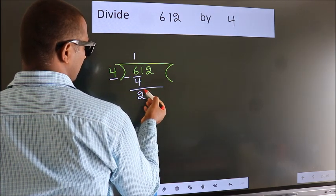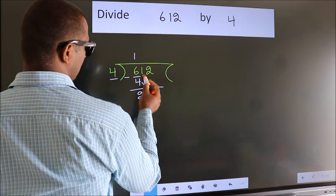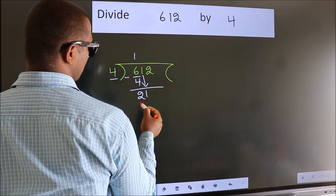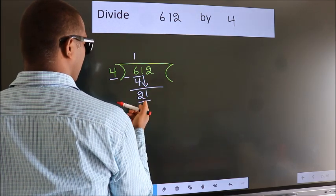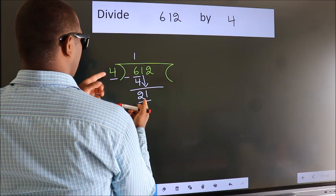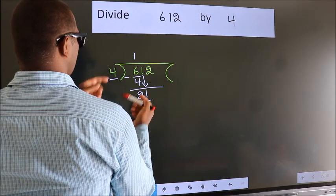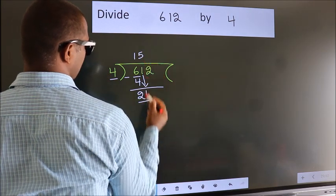After this, bring down the beside number, so 1 down, so 21. A number close to 21 in 4 table is 4 5s, 20.